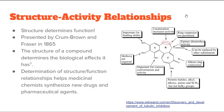Structure-activity relationships: structure determines function — that is the key message of this presentation. This was presented by Crum Brown and Frazier in 1865. The structure of a compound determines the biological effects it has. On the right-hand side here is colchicine, which is used to inhibit mitosis. You can see how all of the different structural features play a role in how colchicine behaves — certain groups are important for binding ability, some are not required for correct conformation activity, and sometimes ligands need to be added just to get the conformation correct.